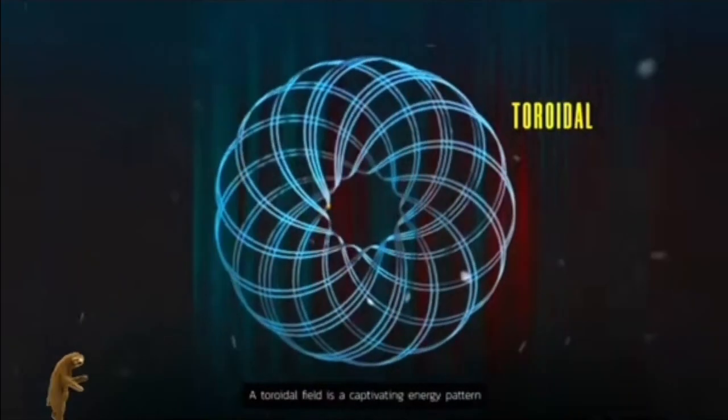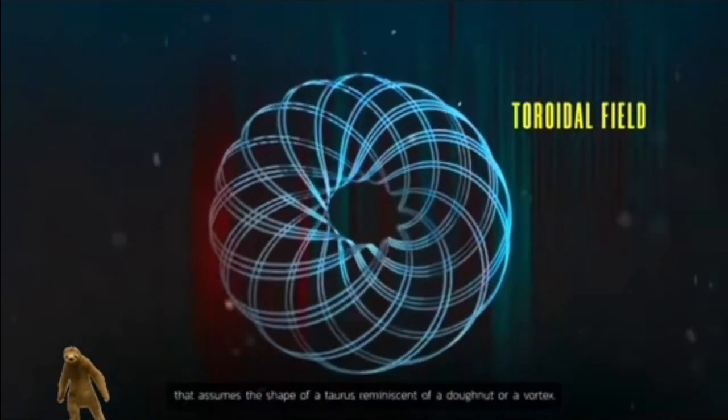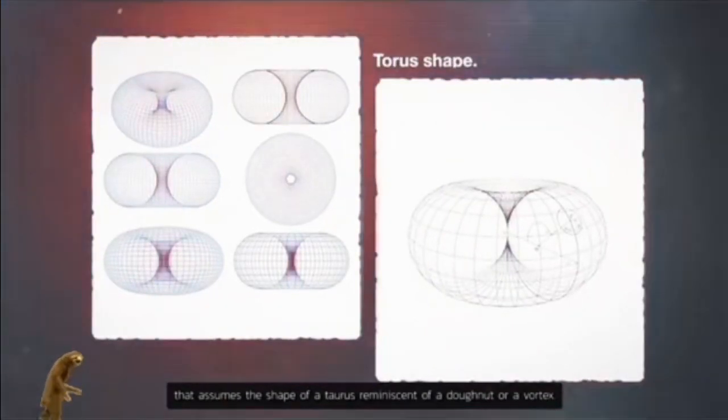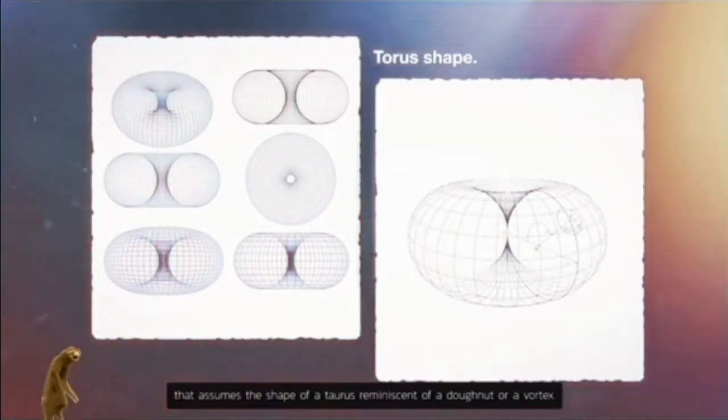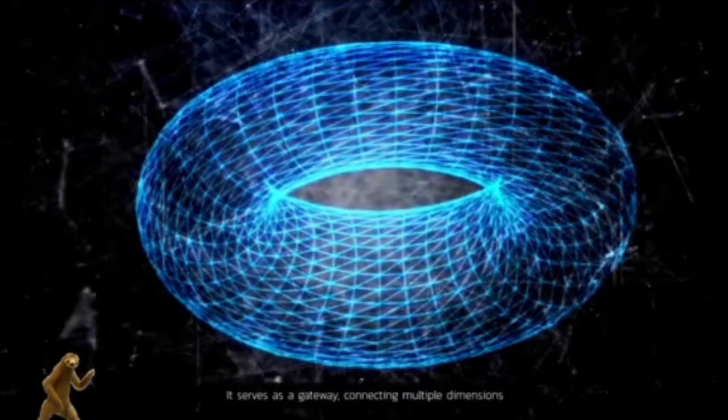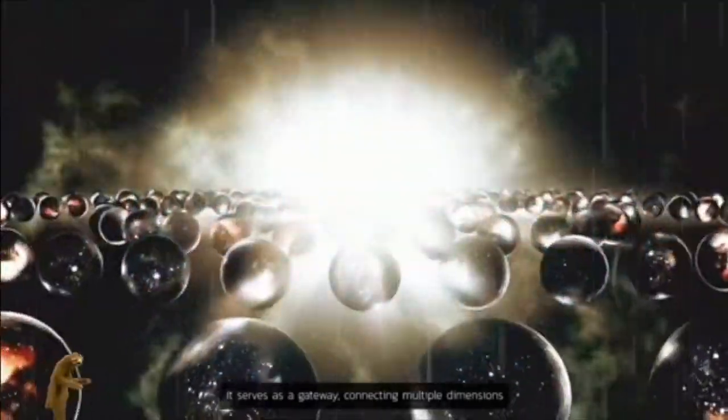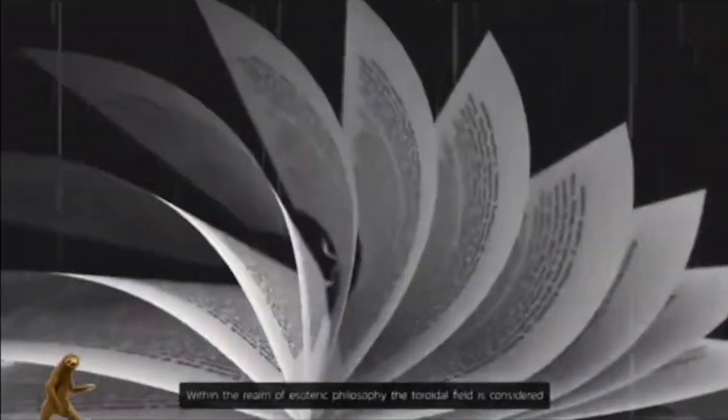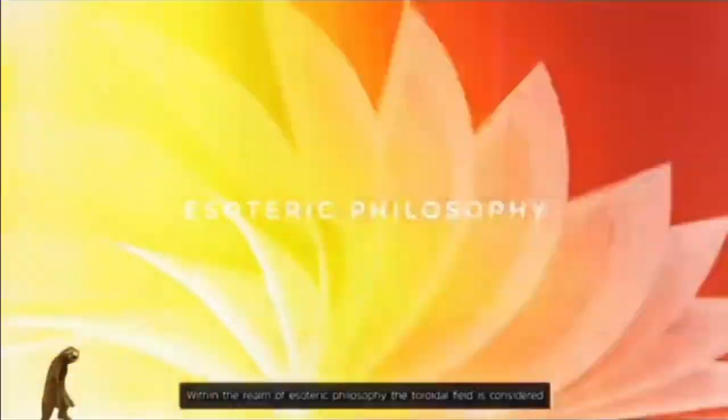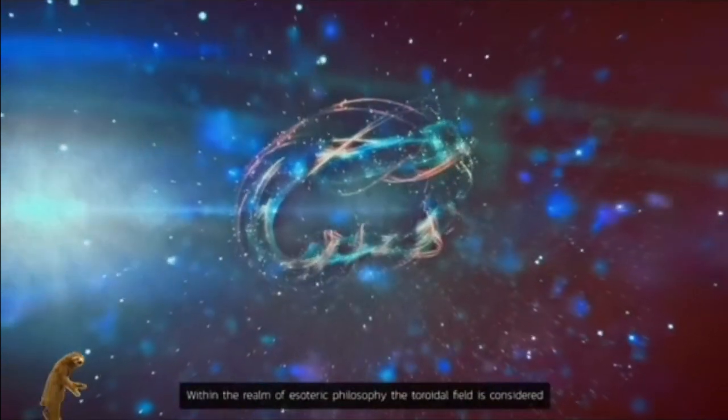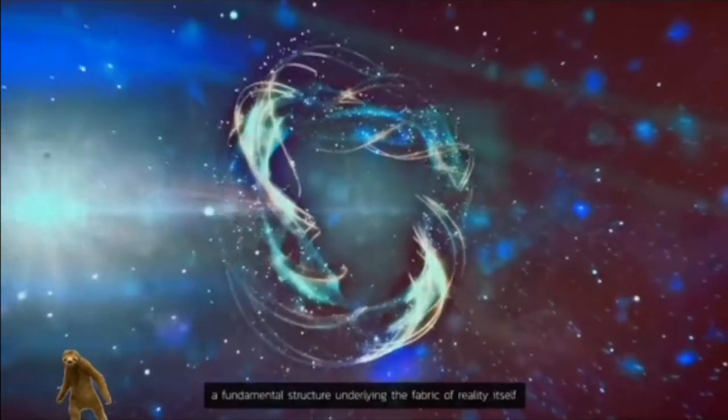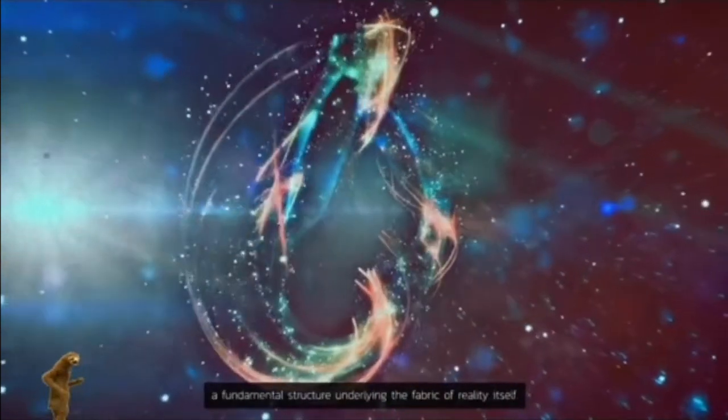A toroidal field is a captivating energy pattern that assumes the shape of a torus, reminiscent of a donut or a vortex. It serves as a gateway connecting multiple dimensions and providing a conduit for the flow of energy and information. Within the realm of esoteric philosophy, the toroidal field is considered a fundamental structure underlying the fabric of reality itself.